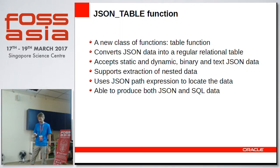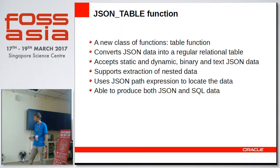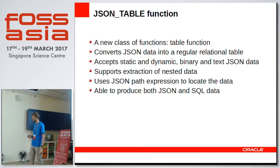Question about nested data: when converting nested JSON data — suppose I have just one level of nesting — how do I visualize it as relational? The speaker answers: I'll explain with an example.